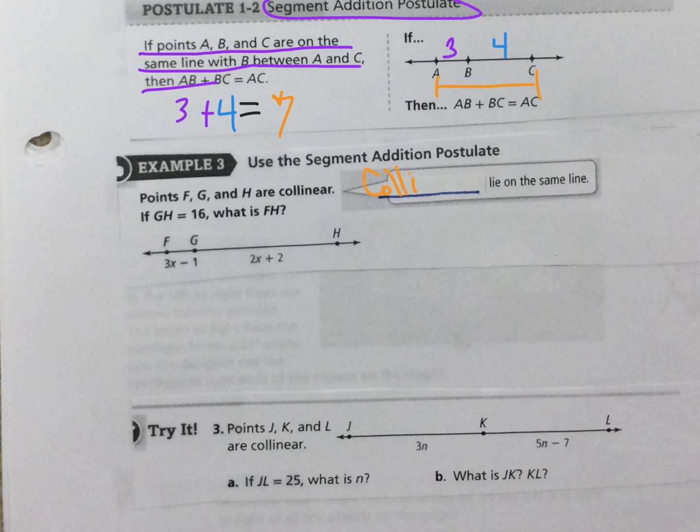Collinear points lie on the same line and if you think about this makes sense, you see the word line in this word. Okay, so collinear, the same line.